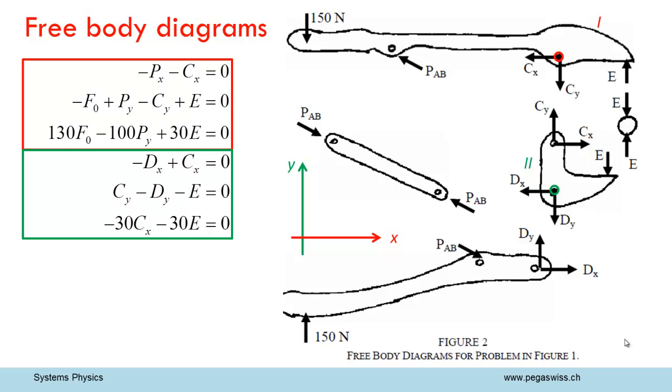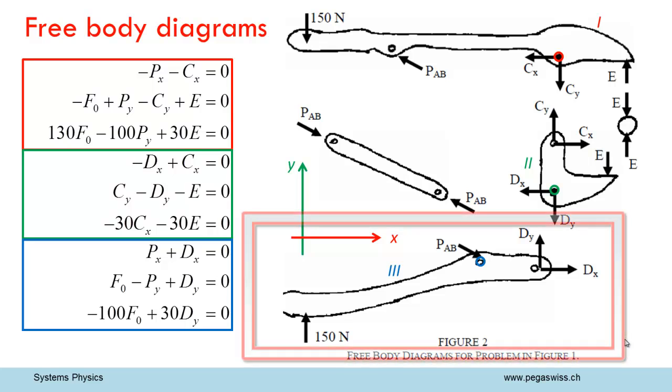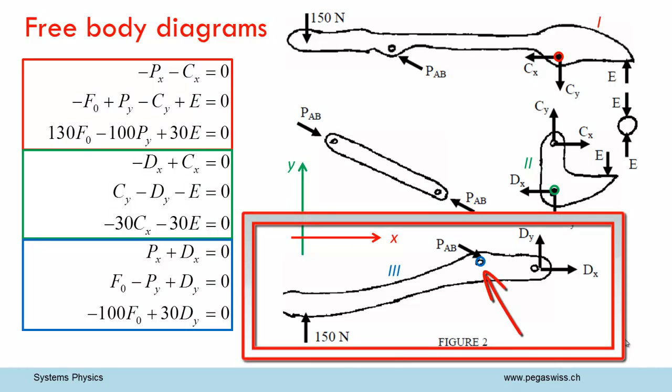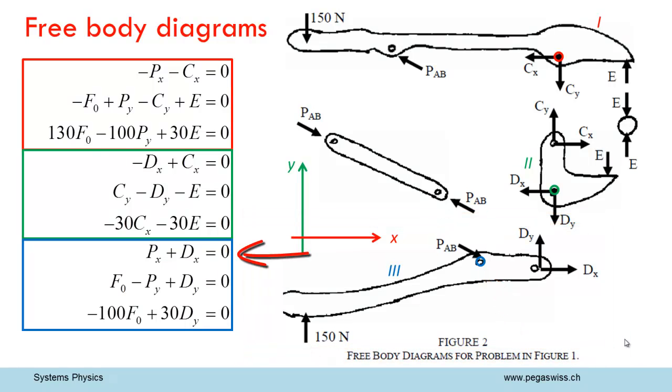Here we see again that Cx was probably entered with the wrong sign. For the third body, we choose our axis of rotation at P. Again, the sum of all x-forces and the sum of all y-forces equal zero. Force F generates a negative torque with a lever arm of 100 mm and force DY generates a positive torque with a lever arm of 30 mm.